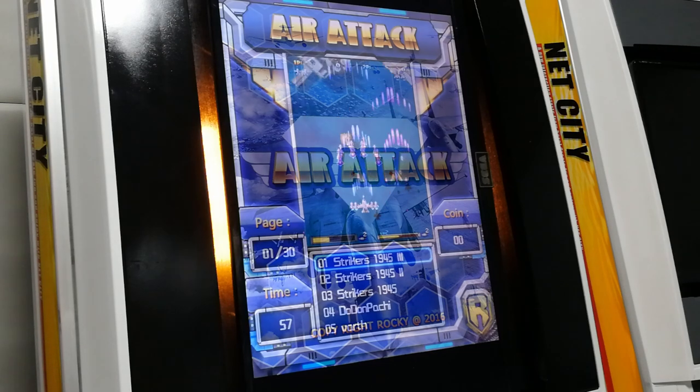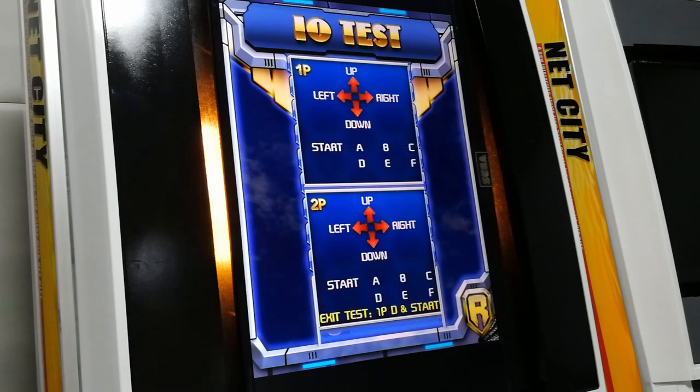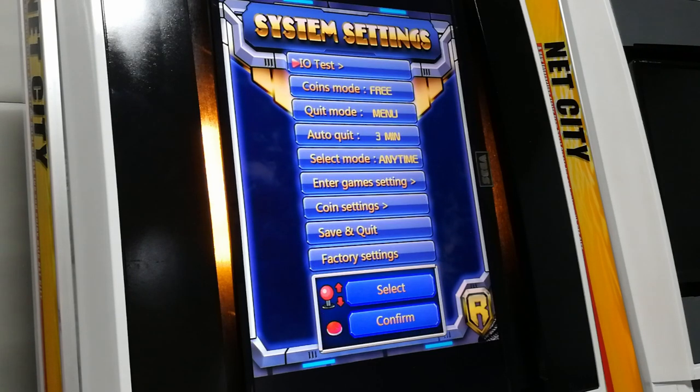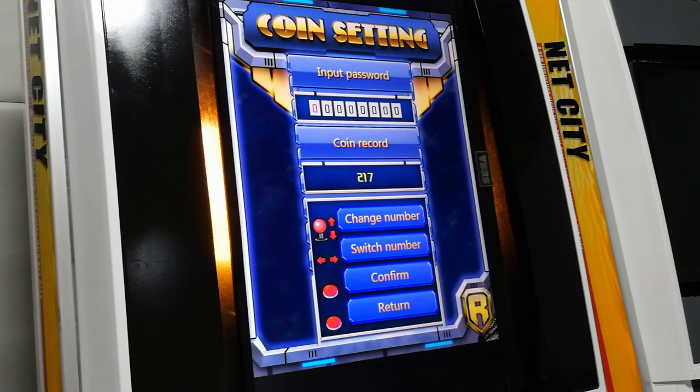Takes about 10 seconds to load, then we're greeted to the games list. But first, let's check out the settings. We have the IO test. Here we can check all the buttons work correctly. We can change the coins mode. If you wish to quit via menu or start and coin. The auto quit. Select mode for if you want to move the games list without coin in or not. Difficulty settings. Coin settings.